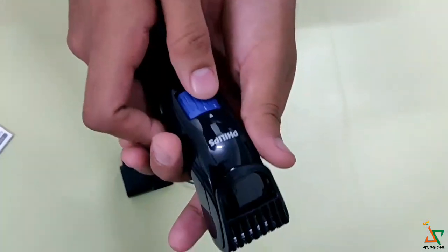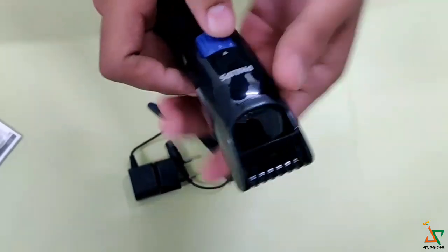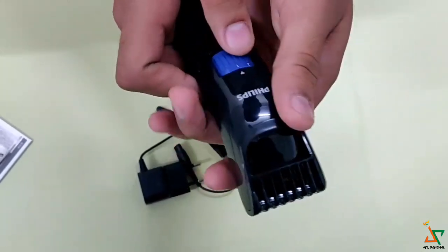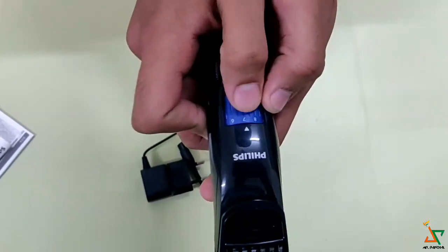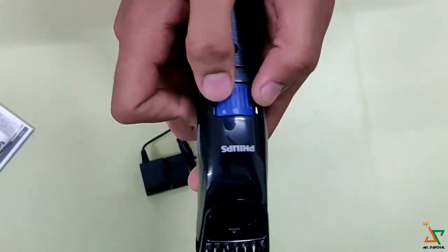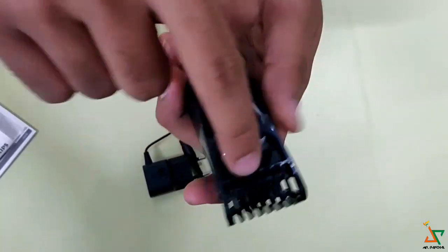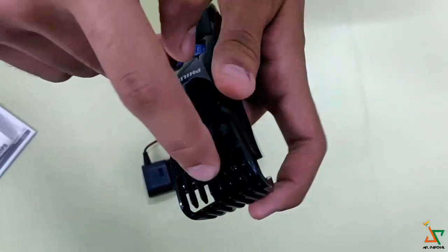Then there are no separate clips because the clips are together with the trimmer. There are settings given from one to ten. We have to cut as per the requirement of hair, the size of hairs.